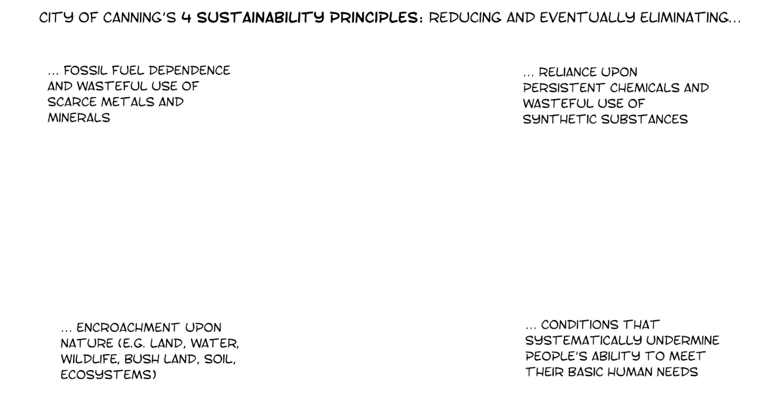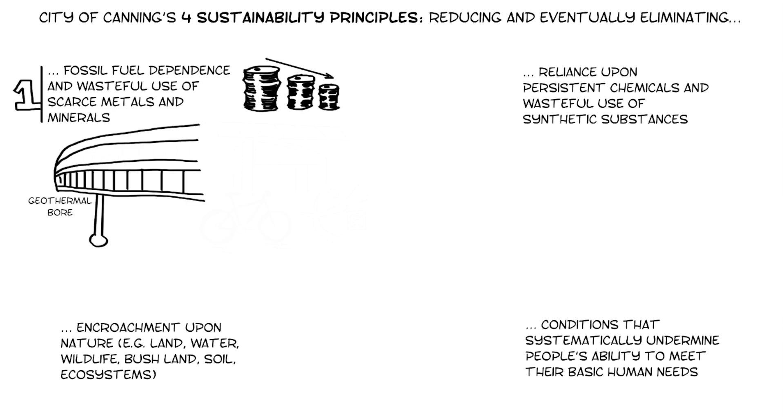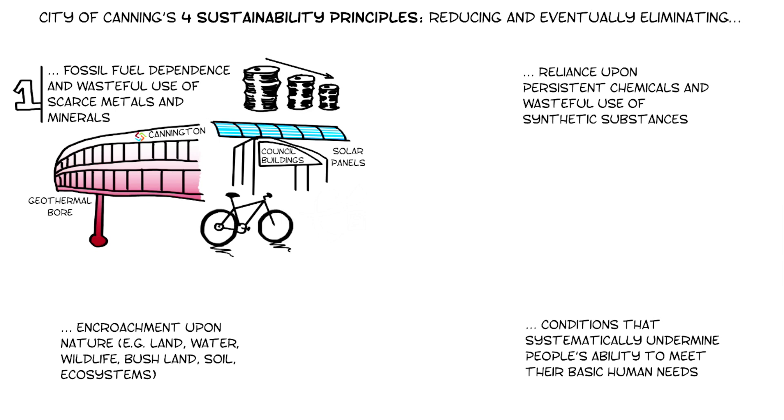At the City of Canning, how are we doing this? Here are some examples. To reduce our fossil fuel use, we've put a geothermal bore at Cannington Leisureplex and are putting a second one at Riverton Leisureplex. We're putting more solar panels on council buildings and solar hot water in sporting change rooms. We're also working on energy efficiency measures throughout council buildings. To encourage staff to use more sustainable transport alternatives, we've got council bikes, corporate smart riders, and we're in the process of purchasing a green pool car fleet.